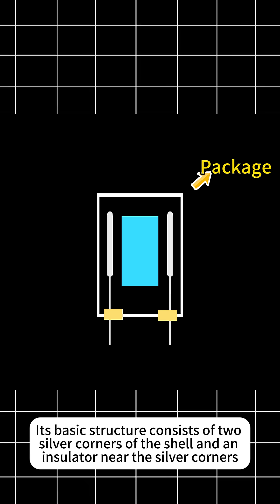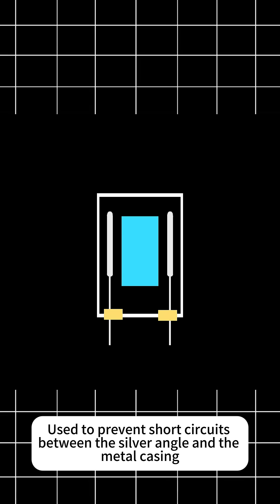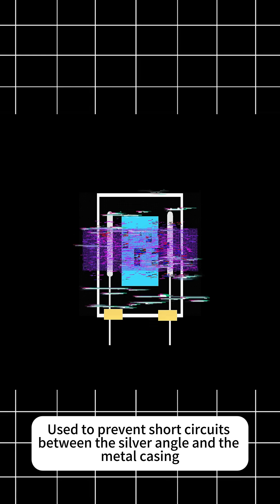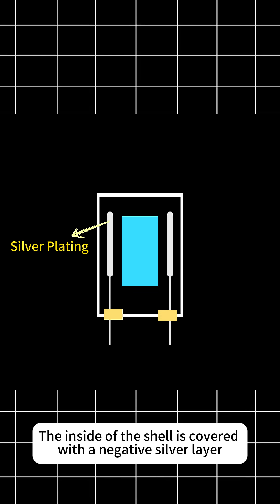Its basic structure consists of two silver corners of the shell and an insulator near the silver corners, used to prevent short circuits between the silver angle and the metal casing. The inside of the shell is covered with a negative silver layer.